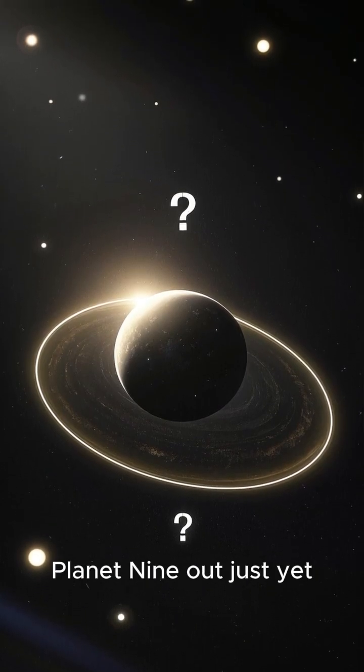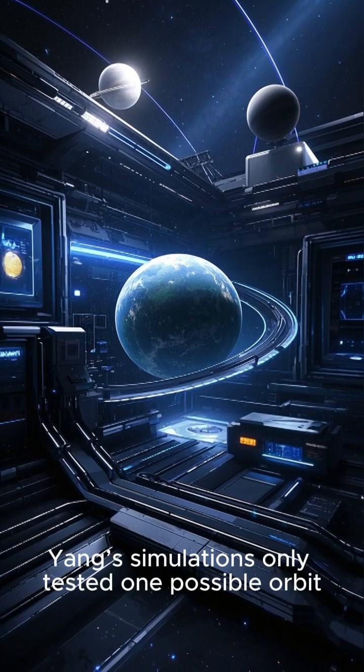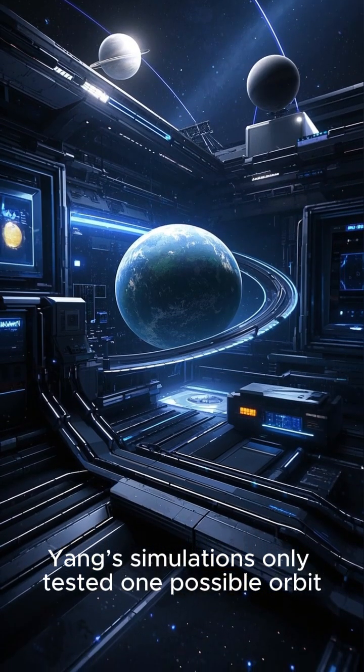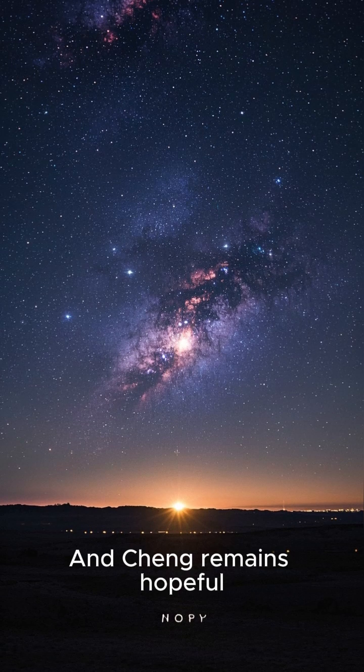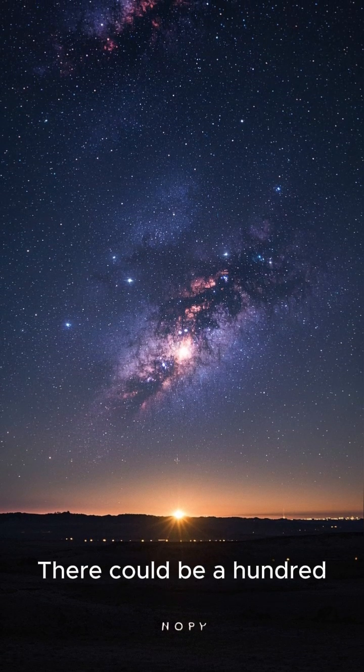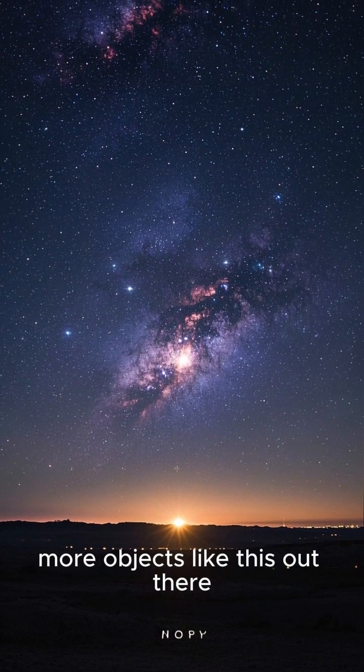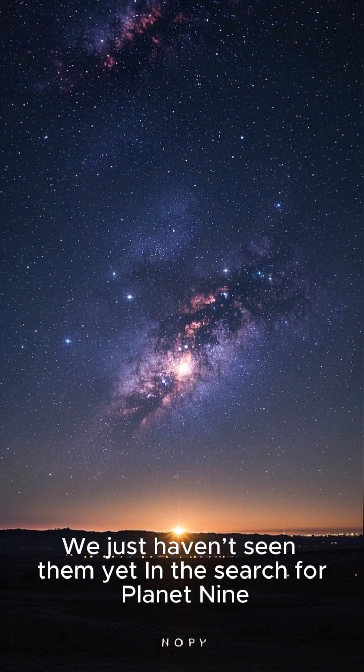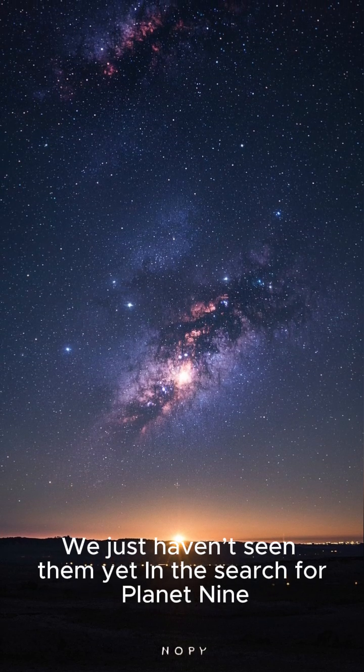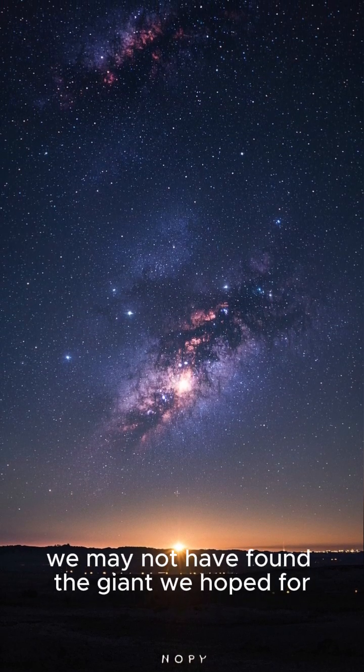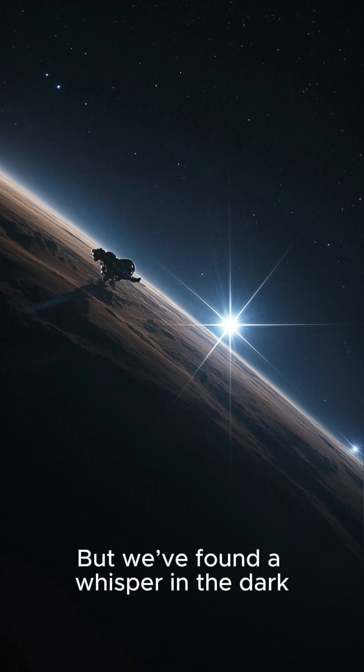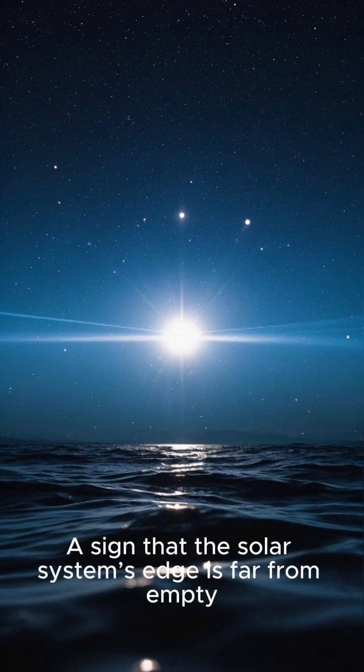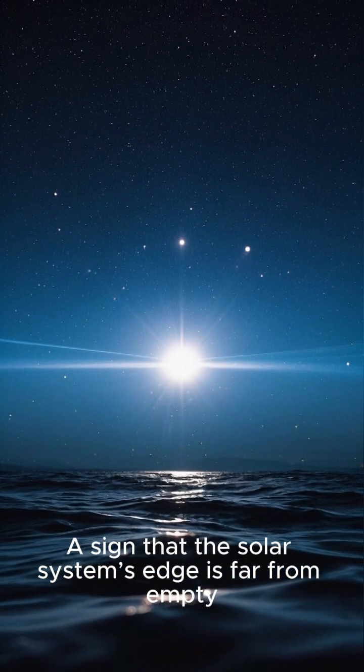But don't count Planet 9 out just yet. Yang's simulations only tested one possible orbit. And Cheng remains hopeful. Cheng stated that there could be a hundred more objects like this out there, if we just haven't seen them yet. In the search for Planet 9, we may not have found the giant we hoped for. But we've found a whisper in the dark. A sign that the solar system's edge is far from empty. And the hunt is far from over.